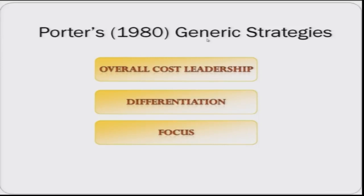The first of these three generic strategies is overall cost leadership. Overall cost leadership means that as a firm, you are the lowest cost provider of an offering — it could be a product or a service. Many retail chains claim to be the everyday low price provider, and many e-commerce businesses claim to provide products at the lowest prices. These are companies pursuing the strategy of overall cost leadership.